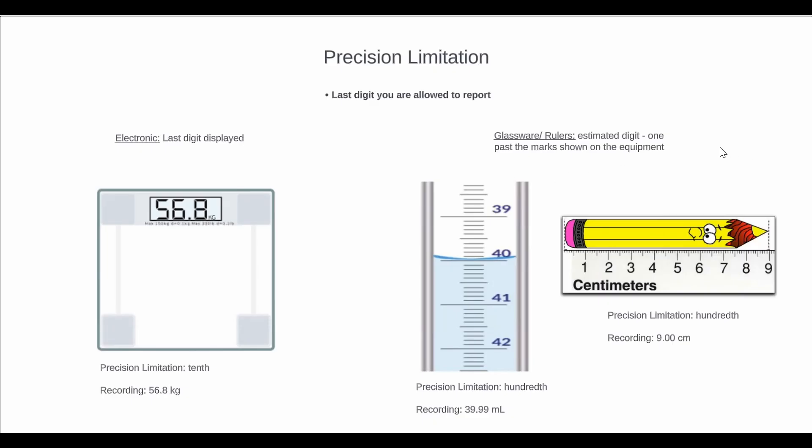So next, we have glassware and burettes. So this is a bit different from electronic scales, where the estimated digit is one past the mark shown on the equipment. So if you look at the example on the left, it's a burette, so I would like to note the readings are backwards. So we can see that the markings on the burette are in the tenths, so it would be 39.1, 0.2, 0.3. You can see those markings there.